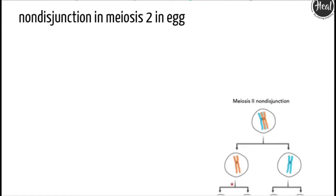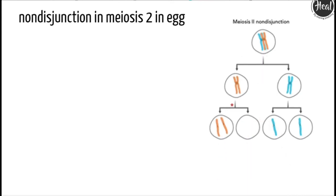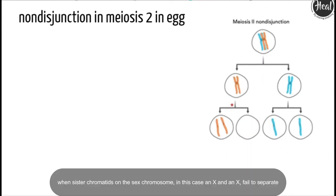Another mechanism for retaining the extra chromosome is through a nondisjunction event during meiosis 2 in the egg. Nondisjunction occurs when sister chromatids on the sex chromosome, in this case an X and an X, fail to separate.